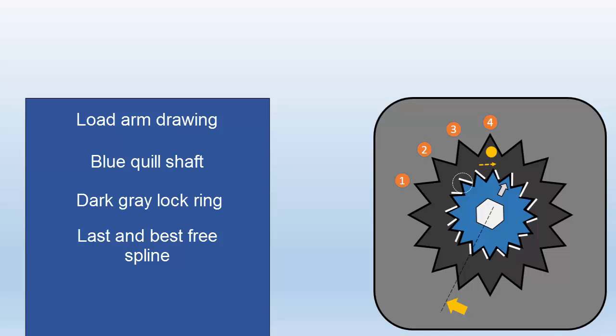The last free spline, in this example the fourth spline, is the only spline that will maintain the quill shaft torque close to 100 inch pounds of torque after removing the torque wrench load.